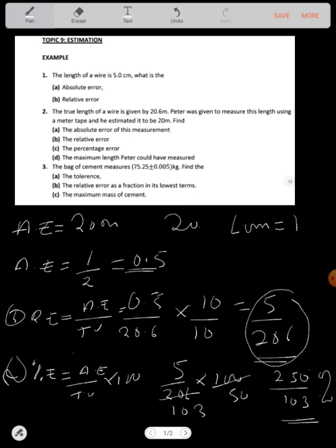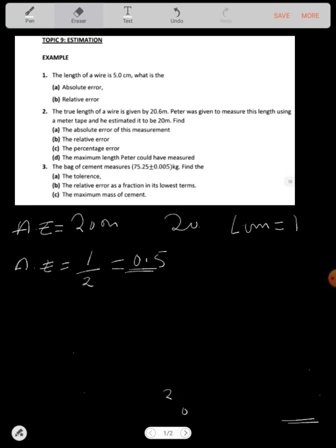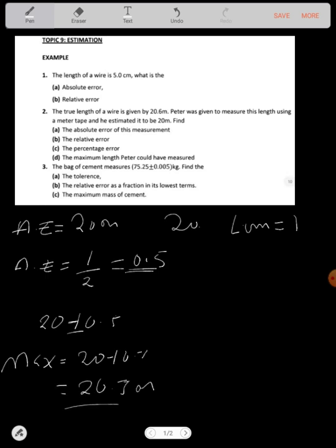What is the maximum length Peter could have measured? We found that our absolute error was 0.5. The value that Peter could have measured is 20 plus or minus 0.5, the absolute error. So the maximum number Peter could have measured is 20 plus 0.5, that will give you 20.5 meters. This is the maximum value Peter could have measured.